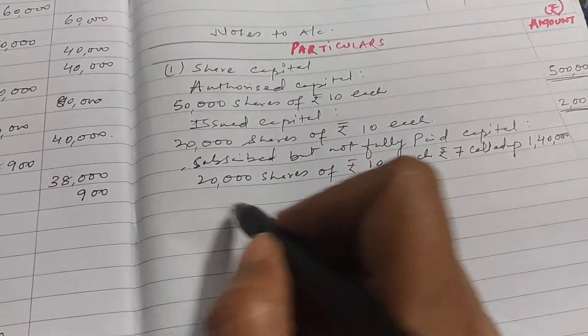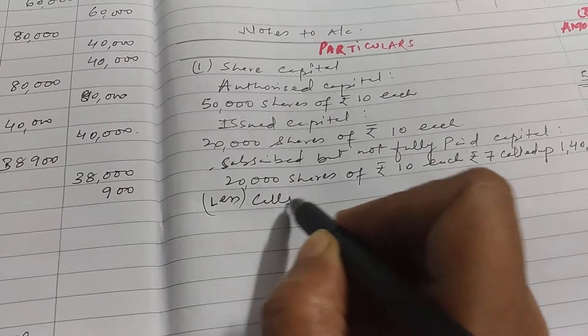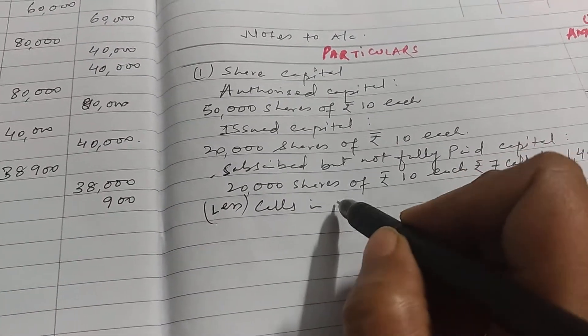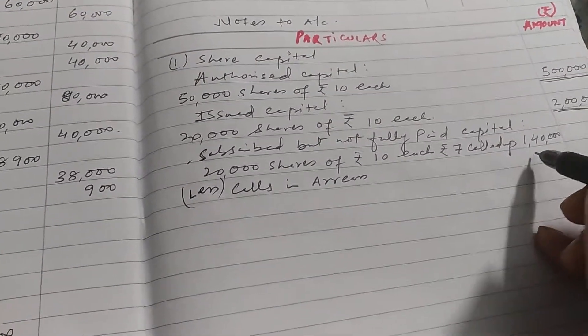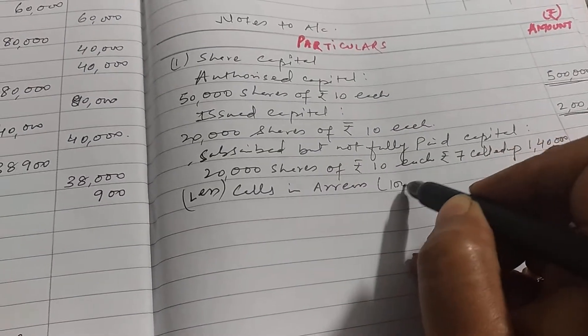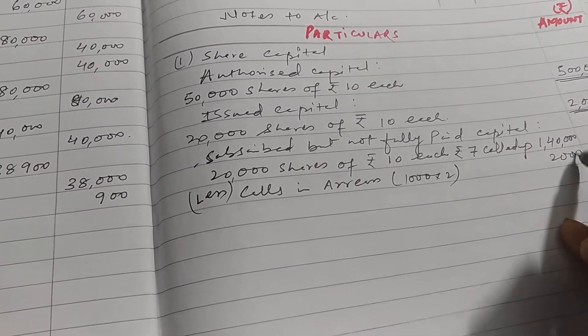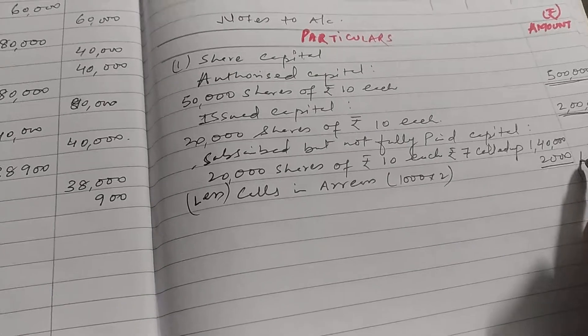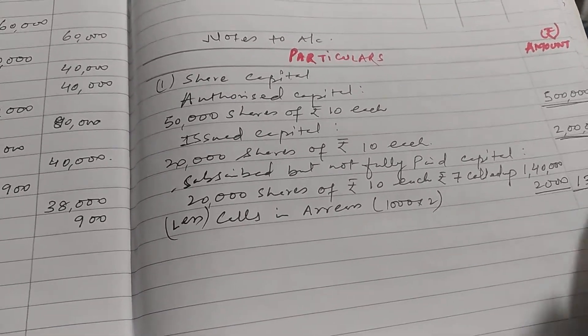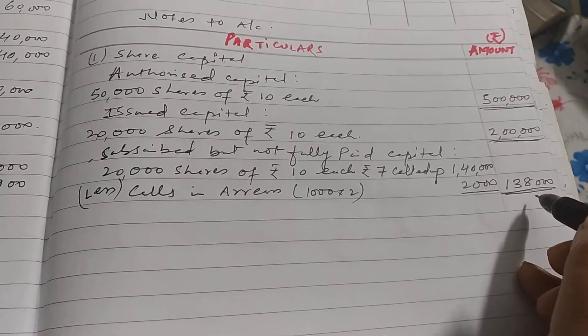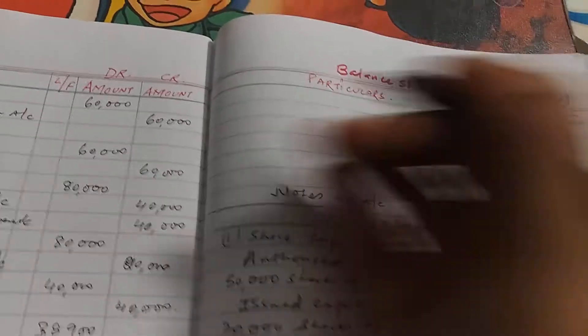Then less calls in arrear. How much is it? 2,000, 1,000 into 2, so 2,000 will be deducted here. One lakh thirty-eight thousand. This one lakh thirty-eight thousand we have to transfer in balance sheet.